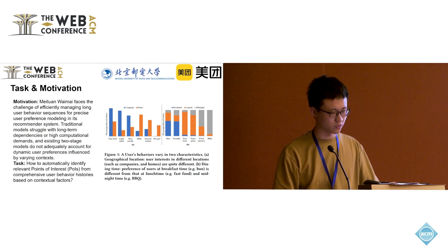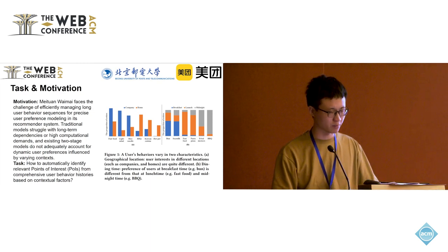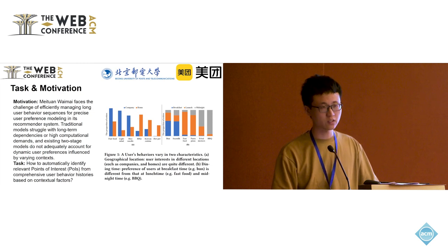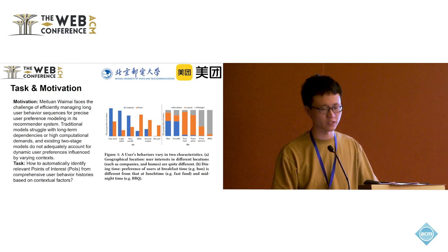We can see that users' interests in different locations are quite different. And the dining time preference of users at breakfast time is different from that at lunch time and midnight. So the existing methods don't fully utilize the context-dependent characteristic. Our task is how to automatically identify relevant points from comprehensive user behavior histories based on contexts.